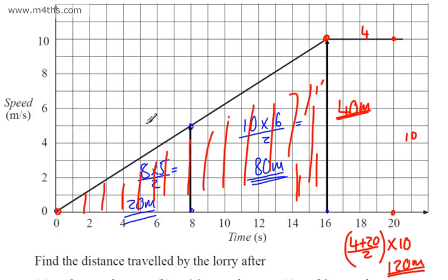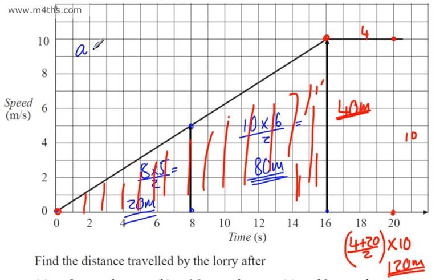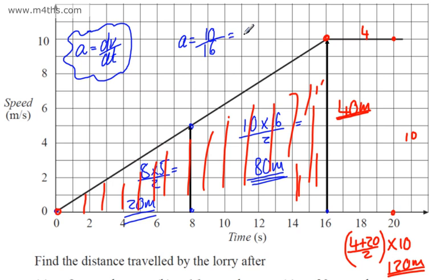Looking at the acceleration for the first 16 seconds: the change in speed is 10. In physics you might see this written as dv/dt — the change in velocity with respect to time. The acceleration is 10 ÷ 16 = 5/8, which is 0.625 metres per second squared. It's the change in y over the change in x — the gradient of that line gives us the acceleration.